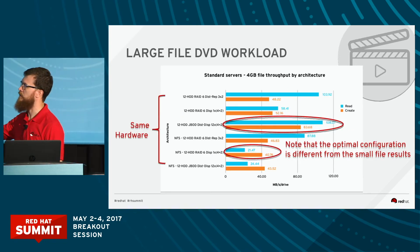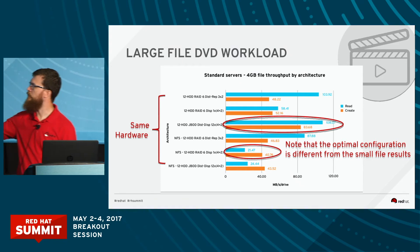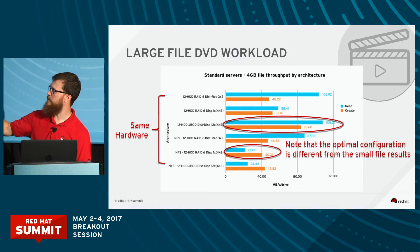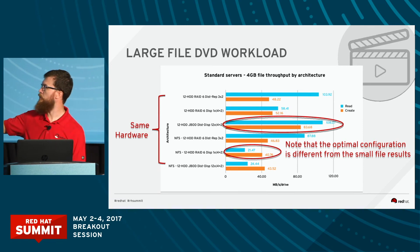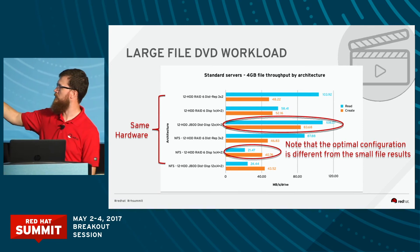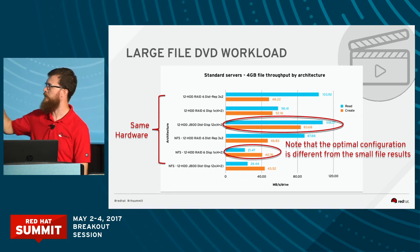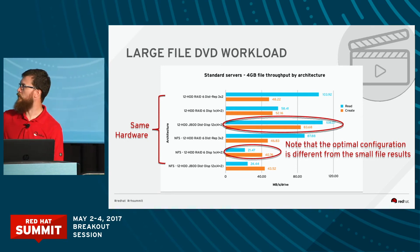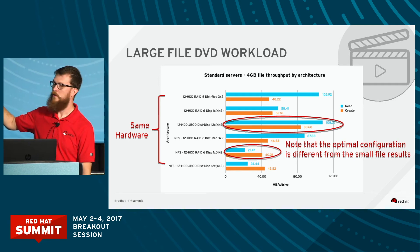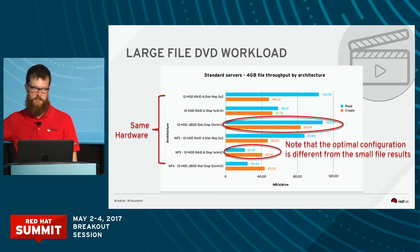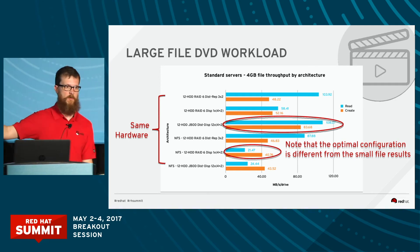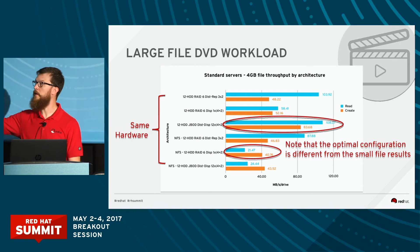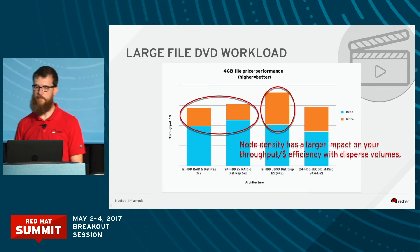Going back to this slide — I do want to point out that first NFS line, the fourth line down. You will actually see that the performance of the NFS client on a distributed replicated volume is pretty good — the writes and reads are pretty decent. So you may actually find that if you need to run NFS, you'll want to do NFS on a replicated volume, not on a dispersed volume. Whereas if you're running the Fuse client, you may want to run the dispersed volume instead of replicated.